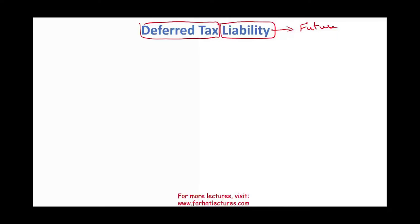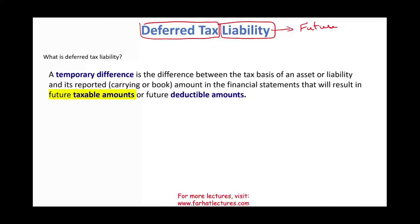How does a deferred tax liability come to life? It is created from something called a temporary difference. We have temporary and permanent differences. The deferred tax liability is a result of a temporary difference — that is, the difference between the tax basis of an asset or a liability and its reported carrying or book basis.